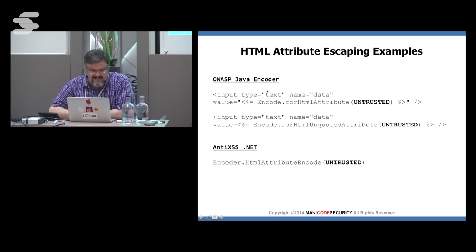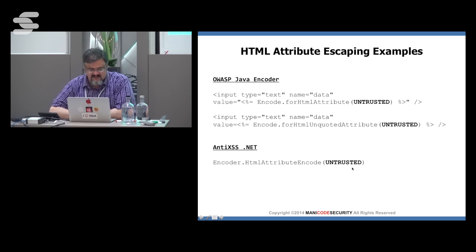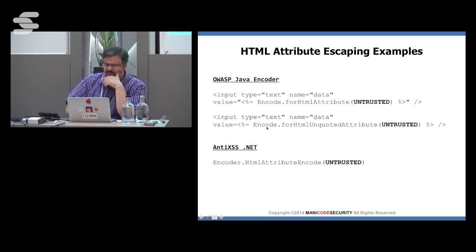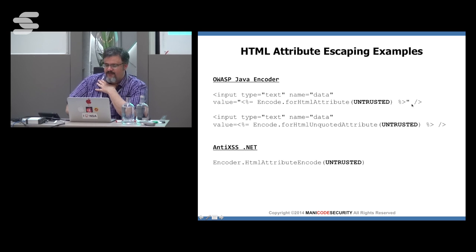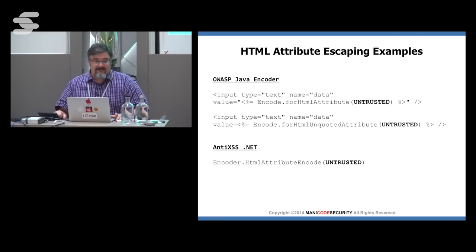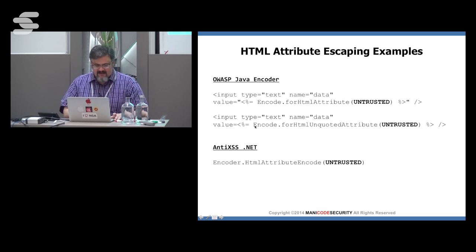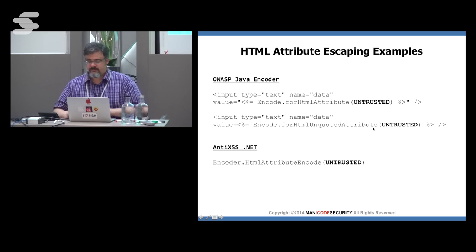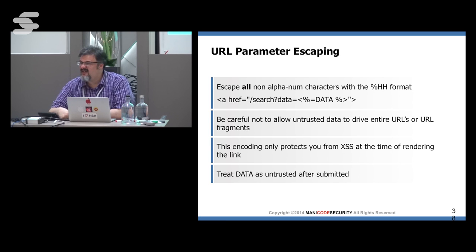Here's another example of escaping: putting data in an attribute — input type text, name is data, value is encode for HTML attribute of untrusted. Because this is in a quoted value, I can say encode for HTML attribute. But in the Java encoder we have extra granularity — we have encode for HTML unquoted attribute in case you have some legacy remediation. When you're in a quoted attribute you need to encode very few characters, yet most encoding libraries encode every possible character. This is nonsense — it hurts performance and page load time. In the Java encoder, encode for HTML attribute encodes very little; encode for HTML unquoted attribute encodes a whole bunch more.